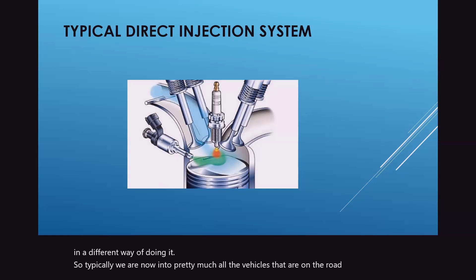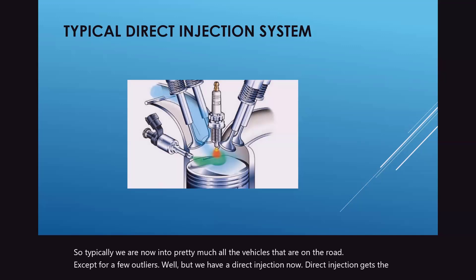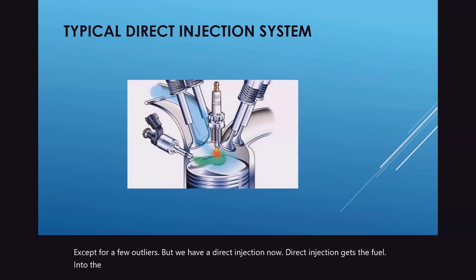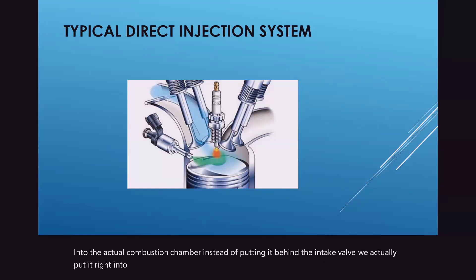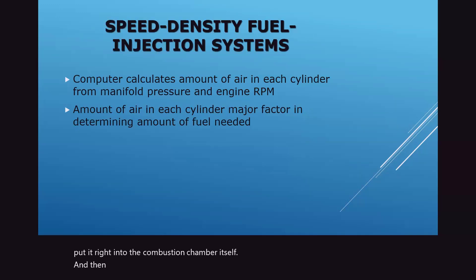Pretty much all vehicles on the road now, except for a few outliers, have direct injection. Direct injection gets the fuel into the combustion chamber — instead of putting it behind the intake valve, we actually put it right into the combustion chamber itself.